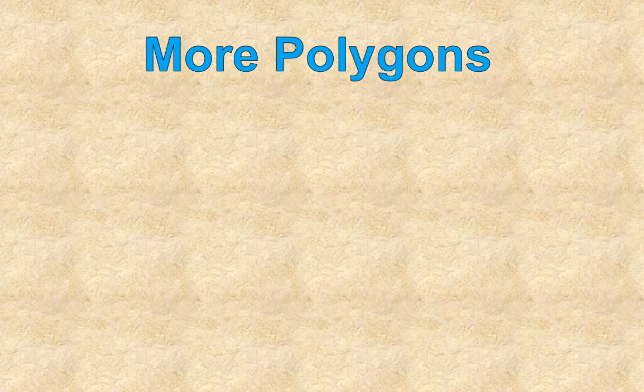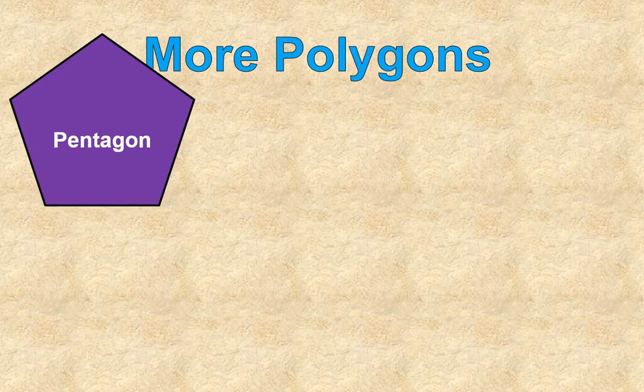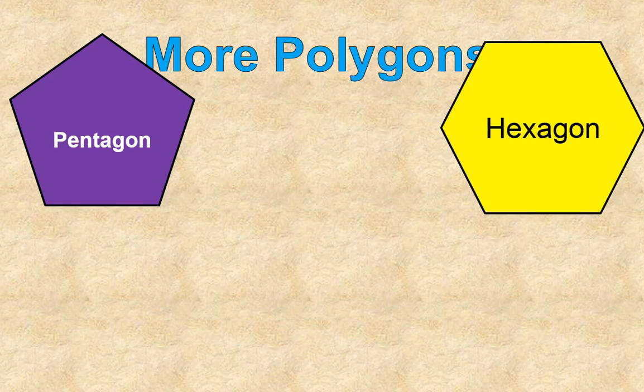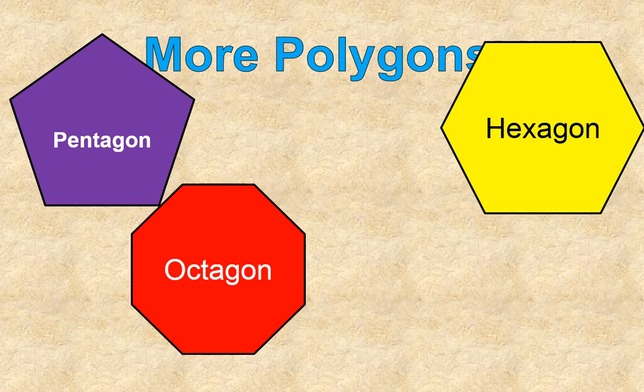And moving along, we're going to look at four more polygons classified by the number of sides that they have. If you have a five-sided polygon, it is called a pentagon. Penta means five. If it has six sides, it's called a hexagon. If it has eight sides, it's an octagon. Octa is that prefix that means eight, like an octopus.